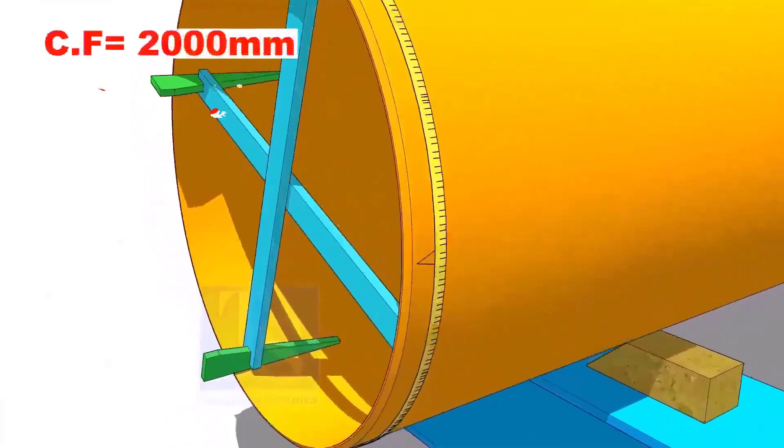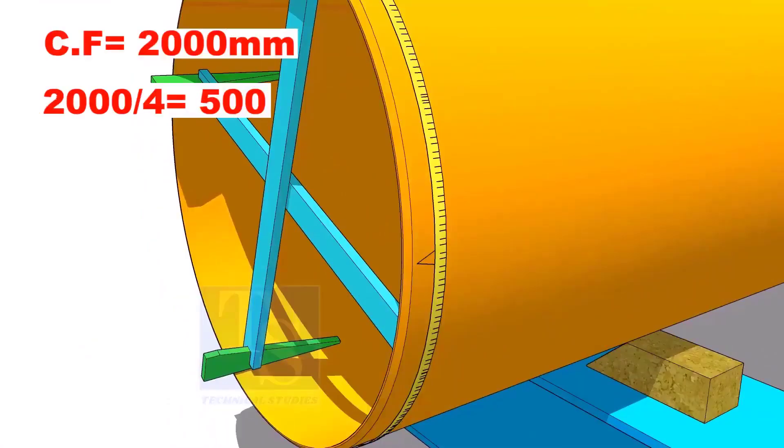Assume that the circumference is 2000 millimeters. Divide it by 4. Now you have the arc length of 90 degrees.